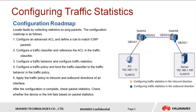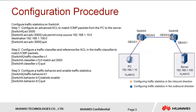After the configuration is complete, check packet statistics. We can check whether the device or the link fails based on packet statistics. Let's move to the detailed configuration. Step one, configure an advanced ACL to match ICMP packets from the PC to the server.